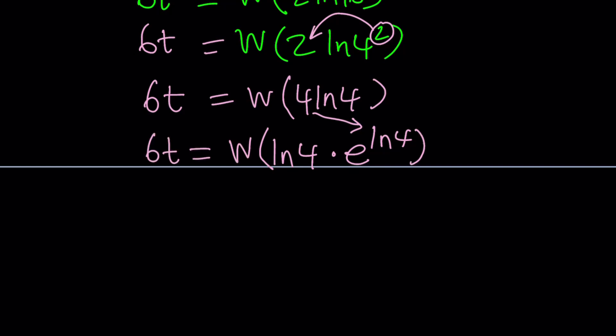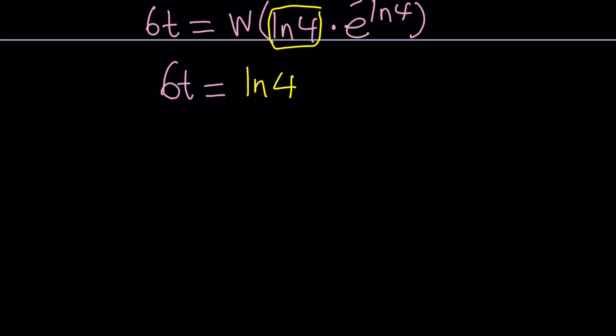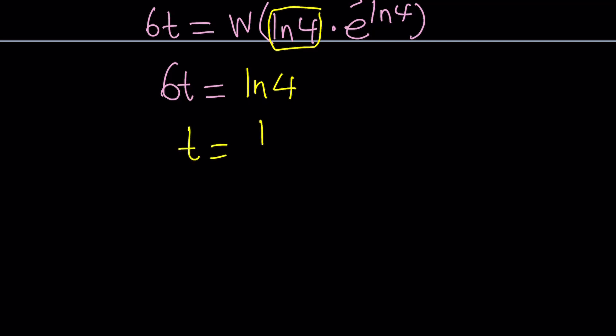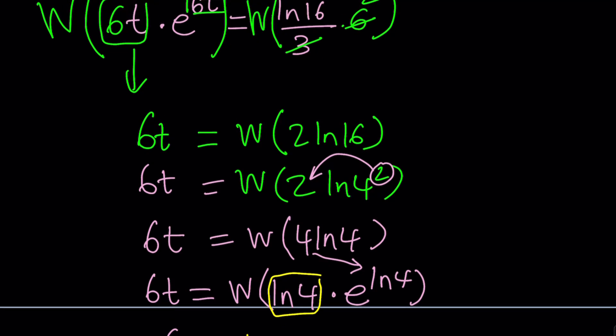Now, notice that after doing this transformation, we can now apply Lambert's w function, and our new z value is going to be this one. So, when I apply w on this, it's going to give me ln 4. Beautiful, right? Nice and easy. Now, from here, we can solve for T. T is just going to be ln 4 divided by 6. And that can definitely be simplified, because 4 is ln 2 squared, which can be written as 2 ln 2. And then, 2 goes into 6 three times, and we get ln 2 divided by 3 for T.